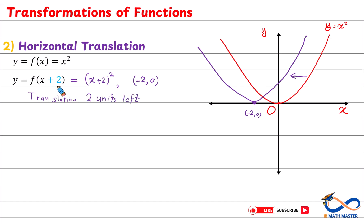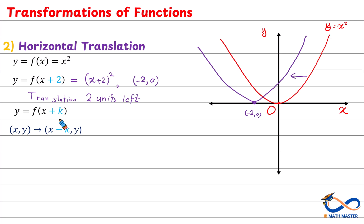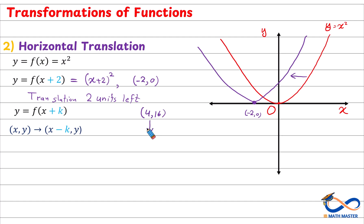If we added 5, it would be f of x plus 5, giving a translation of 5 units left. Generally speaking, if we add a positive number k inside with x, it will be a translation of k units to the left, and the point (x, y) is transformed to (x − k, y) — we subtract k from x. For example, if we have the point (4, 16) and move 2 units to the left, it becomes (2, 16), since 4 minus 2 equals 2.